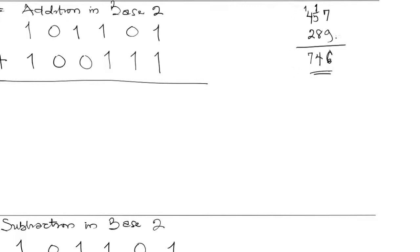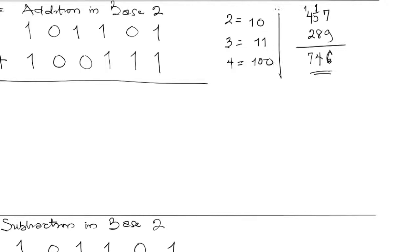We apply the same thing in base 2. The only difference is that here we're carrying 2 because we're working in base 2. To carry out the sum efficiently and accurately, there are some things you need to quickly write down by the side. If you're adding or subtracting in base 2, note that 2 in base 2 is 10, 3 in base 2 is 11, and you might also add 4 as well.